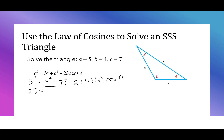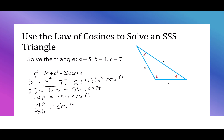I'm going to add together 4 squared plus 7 squared, which is 65. Then I have minus 2 times 4 times 7, which is 56, cosine of A. I'll move the 65 over to the left: 25 minus 65 is negative 40 equals negative 56 cosine of A. I'll divide both sides by negative 56: negative 40 over negative 56 equals the cosine of A. A negative over a negative is a positive. We can reduce 40 over 56 to 5 over 7. Taking the cosine inverse of 5 over 7, A is about 44.42 degrees.